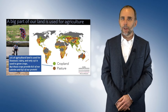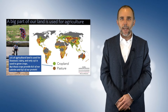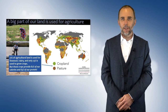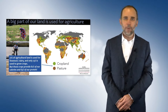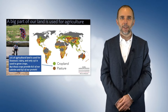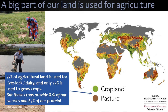Looking at this on a map, we can really get a sense of where agriculture exists — it's everywhere in our habitable land. 77% of that agricultural land is used for livestock and dairy, while only 23% is used to grow crops. Yet those crops provide the majority of the calories and the protein, resulting in very different outcomes for food security.